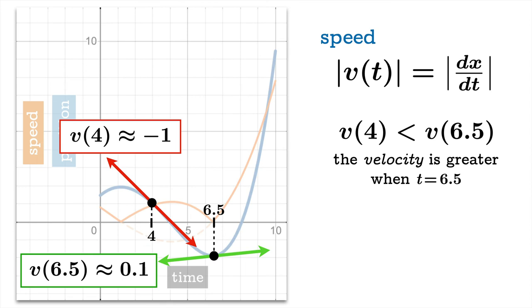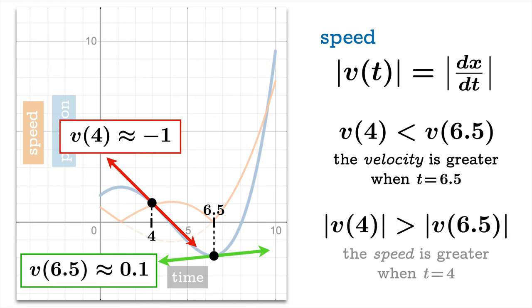But now if we look at speed, the absolute value of negative 1 is 1, and 1 is bigger than 0.1, so the speed at time 4 is greater than the speed at time 6.5. So you can just look at this example and you realize there is a distinction between velocity and speed.